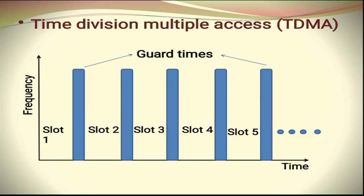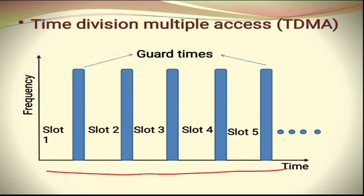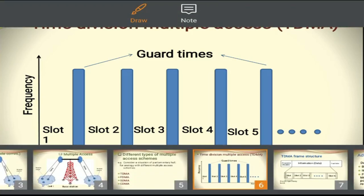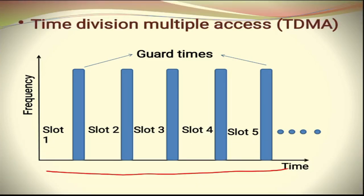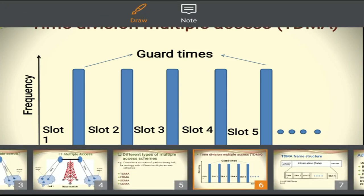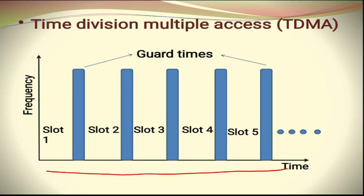In digital systems, continuous transmission is not required because users do not use the allotted bandwidth all the time. In such cases, time division is useful. In TDMA, each user is given a particular time slot regularly after a fixed interval. The total time is divided into multiple slots — slot one, slot two, slot three, slot four, and so on. Each slot is provided to a corresponding user, and N number of slots are provided to N number of users.